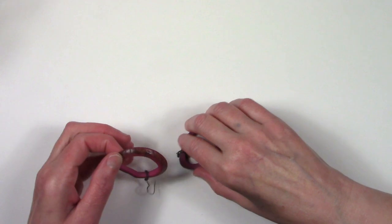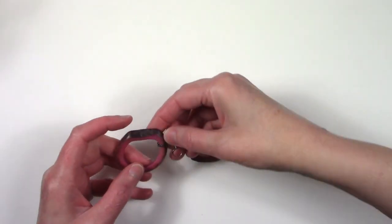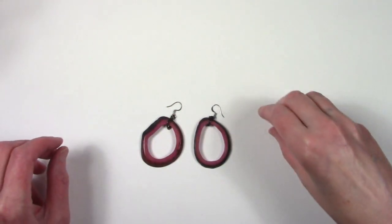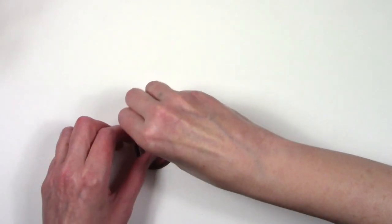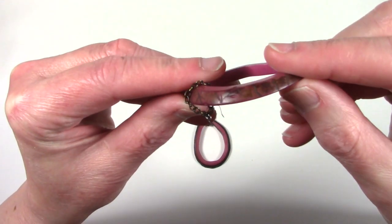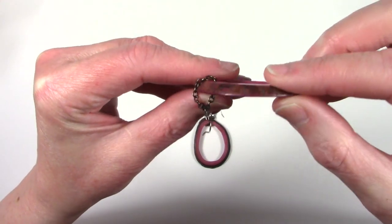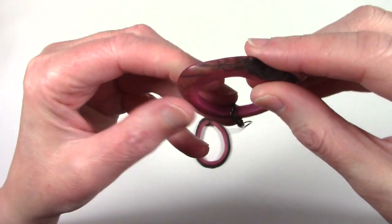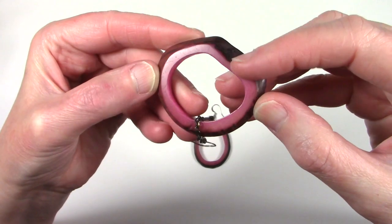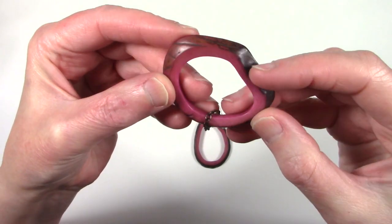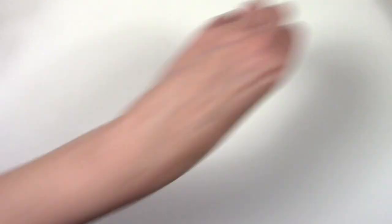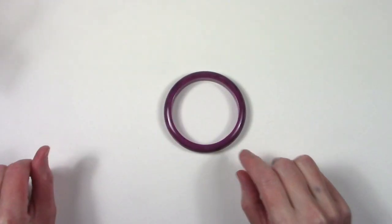Some dangle earrings. So these are dyed, definitely dyed purple. I'm not quite sure what they're made from. Let's take a closer look. They're very lightweight. It looks like they might be dyed pieces of wood but they're very lightweight for wood.